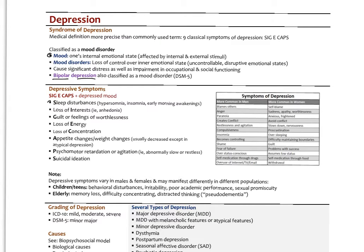The nine classic symptoms of depression — SIGI CAPS: S is sleep disturbances, either hypersomnia or insomnia; I is loss of interest, which is anhedonia; G is guilt or feelings of worthlessness; I is loss of energy; C is loss of concentration; A is appetite changes, usually decreased, though in atypical depression it could be the opposite; P is psychomotor slowness or agitation; and S is suicidal ideation.